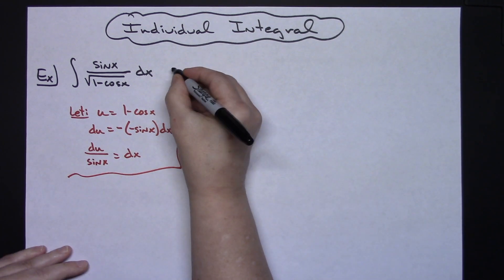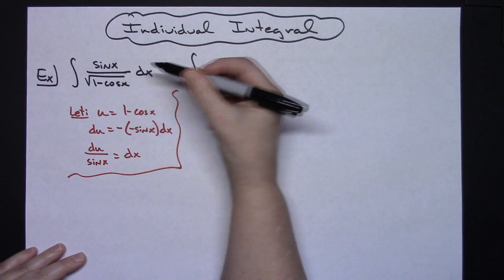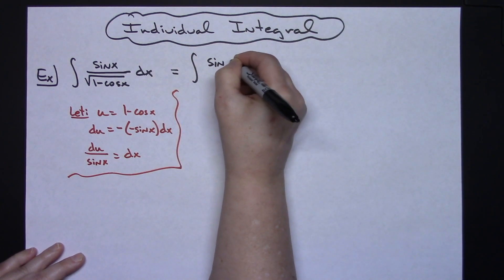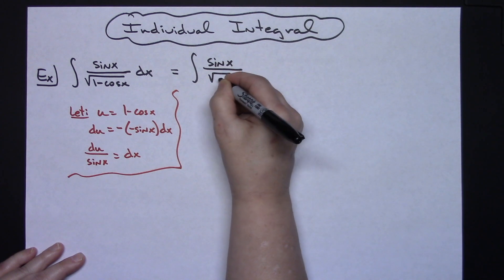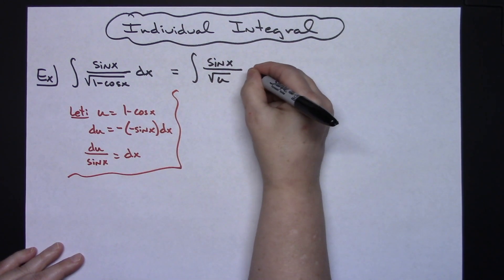Okay then I'm going to come back up to my original integral and I'm going to start doing some substitutions. I'll have that sine x will still be in my numerator. In that bottom I'll have the square root of u because I'm going to replace u with what I said it was going to be equal.